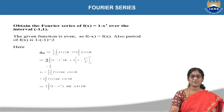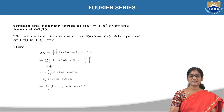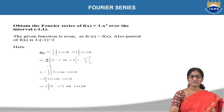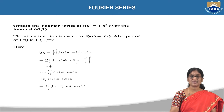Let us take one example: obtain the Fourier series of f(x) = 1 − x² over the interval [−1, 1]. The given function is even because substituting minus x in place of x gives back f(x). The period is nothing but the upper limit minus lower limit, that is 1 − (−1) = 2. So a₀ = (1/1) integral from −1 to 1 of f(x) dx, where f(x) = 1 − x².